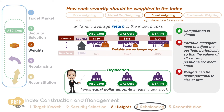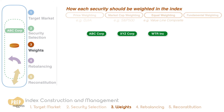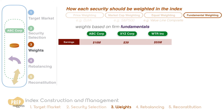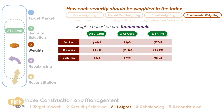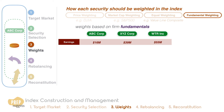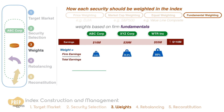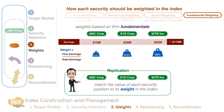The Value Line Composite Average is a well-known example of an equal weighted index. An index that uses fundamental weighting uses weights based on firm fundamentals such as earnings, dividends or cash flow. The weights can be based on a single measure or some combination of these measures. For example, if this index is weighted by the earnings of the firm as a proportion of the total earnings of all the constituent stocks, the weights assigned to each stock will be as follows. To replicate the returns of the index, a portfolio manager should match the value of each security position to its weight in the index, like that of a market cap weighted index.